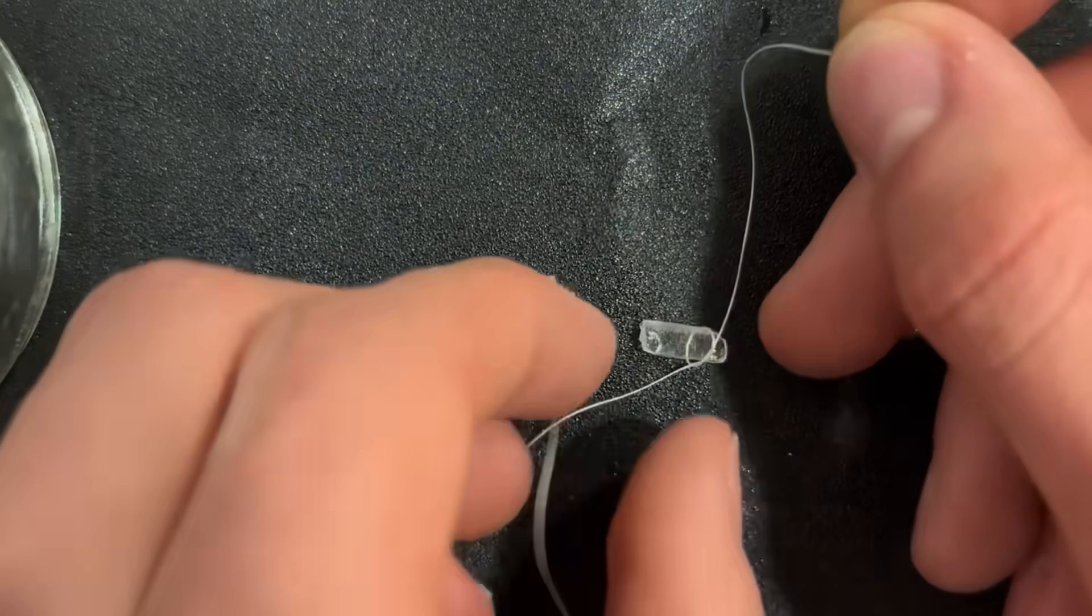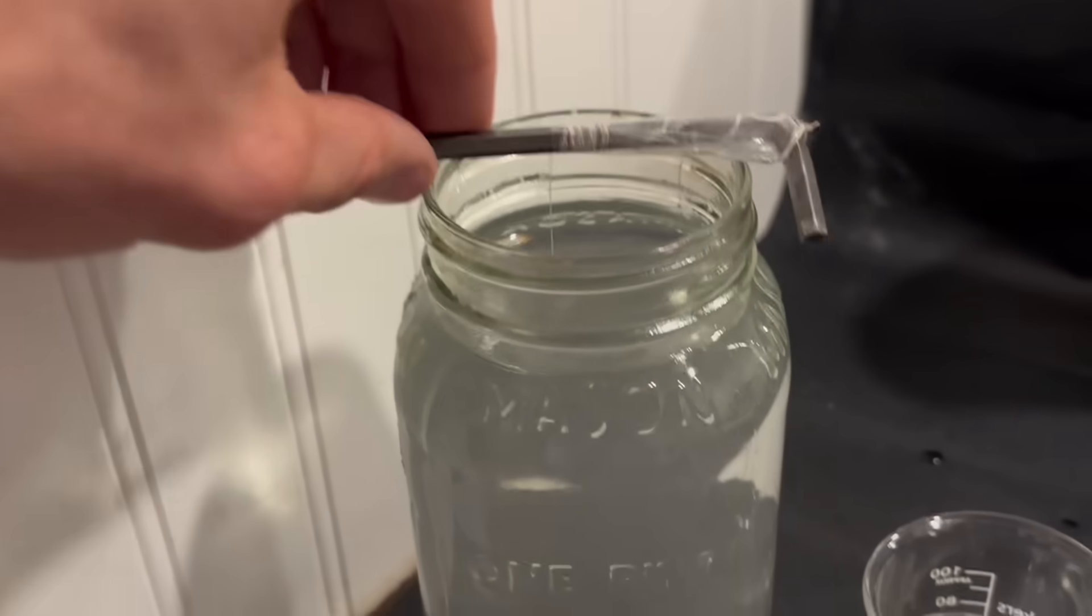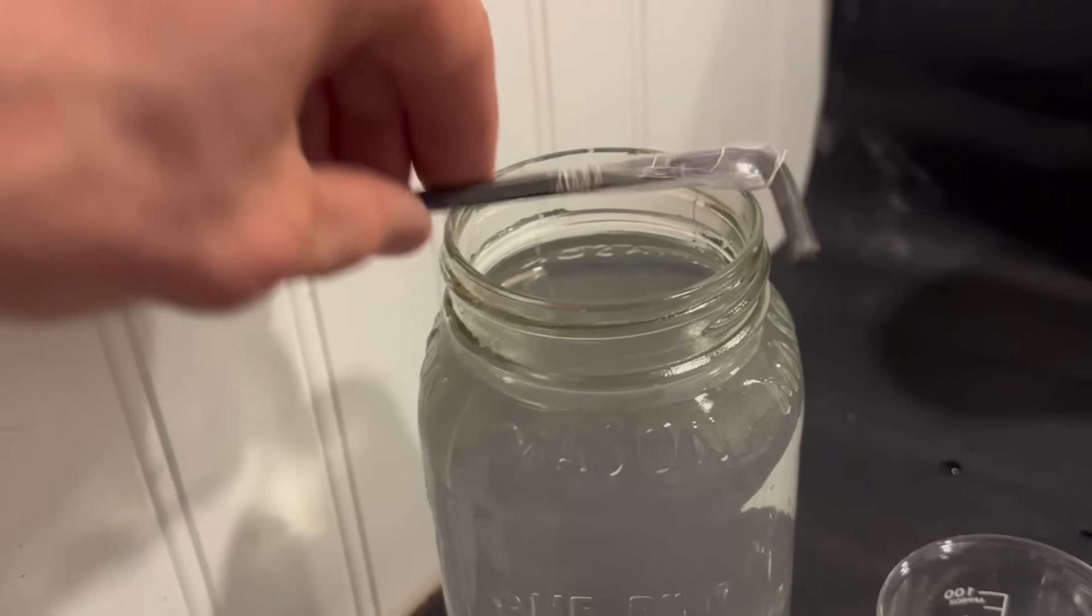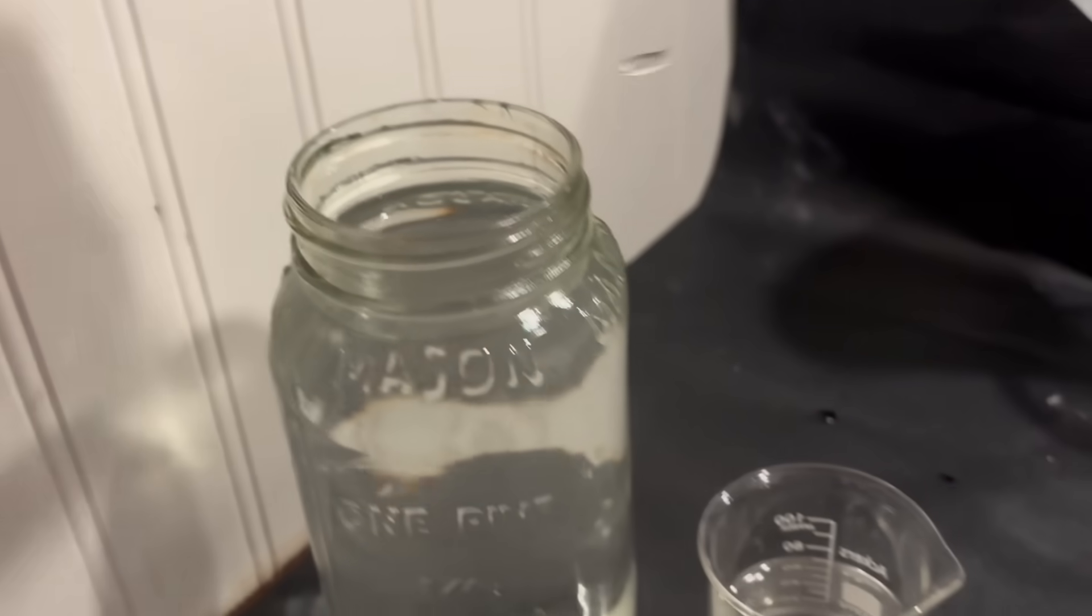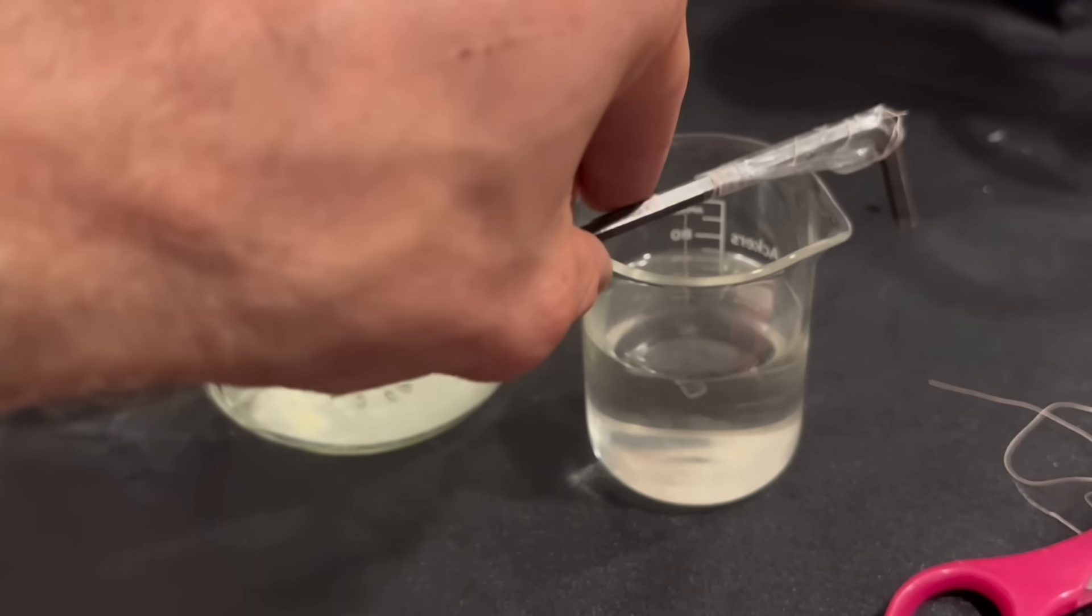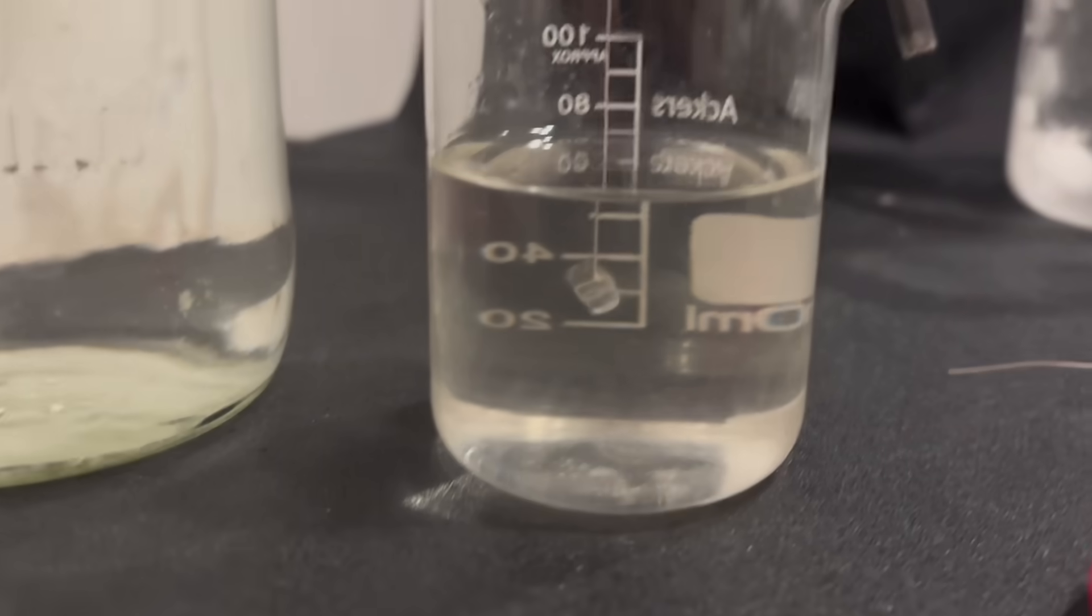If I tie these seed crystals on some string, and then lower them down into the crystal growing solution, crystal growth will be concentrated on this seed crystal, allowing it to grow large as the water evaporates.